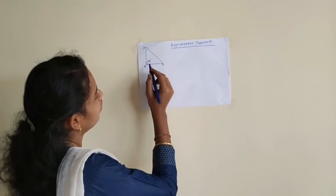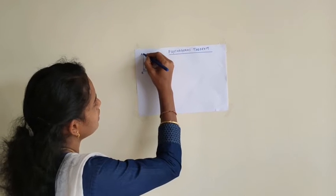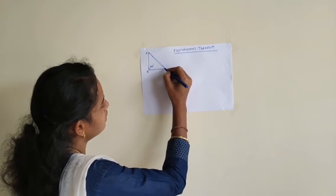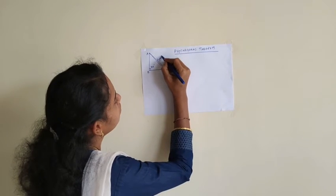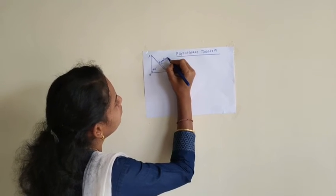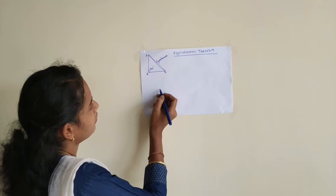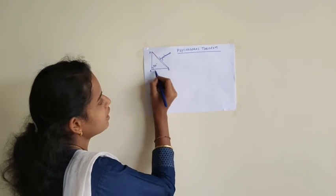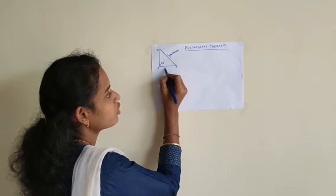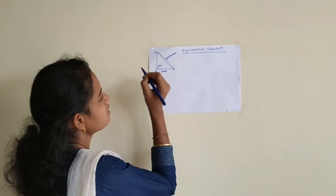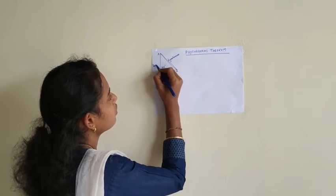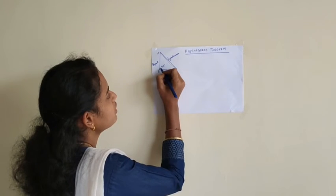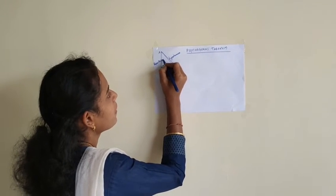And the longest side, the length of the side opposite to that 90 degree angle is the hypotenuse. And this one is the base side, so we are calling it as base. And this one is the perpendicular, which is perpendicular at the 90 degree angle.